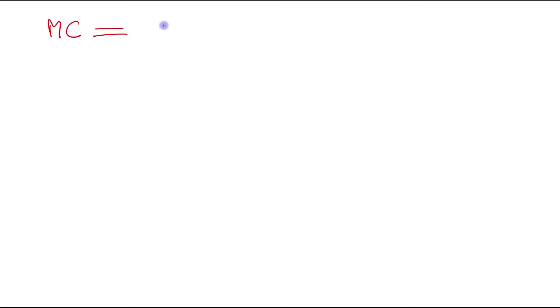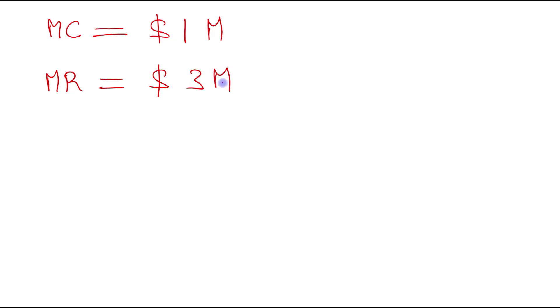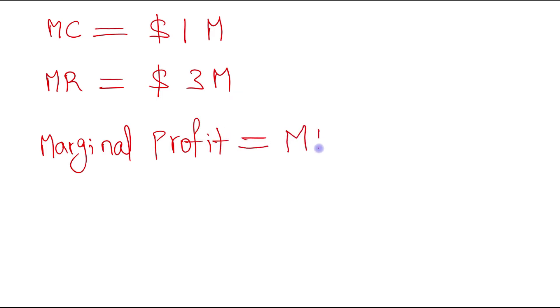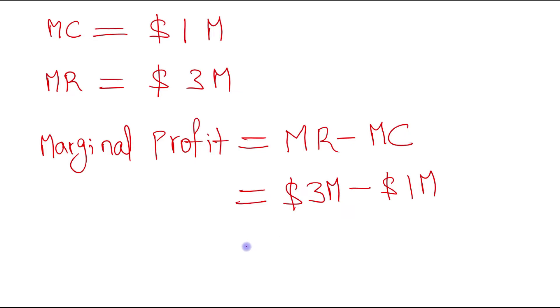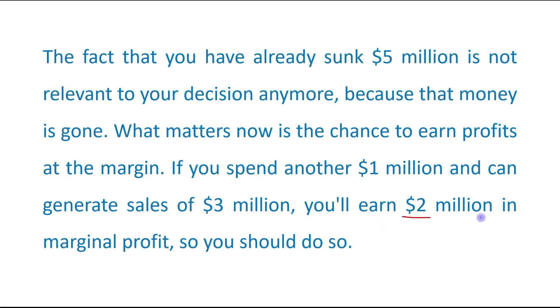If you incur the additional cost of finishing the development — which is $1 million, so marginal cost is $1 million — then your marginal revenue, which is the expected sales, is $3 million. In that case, your marginal profit, calculated as marginal revenue minus marginal cost, is $3 million minus $1 million, giving you a marginal profit of $2 million. So you should make this additional investment of $1 million to complete the development because you are earning marginal profit.